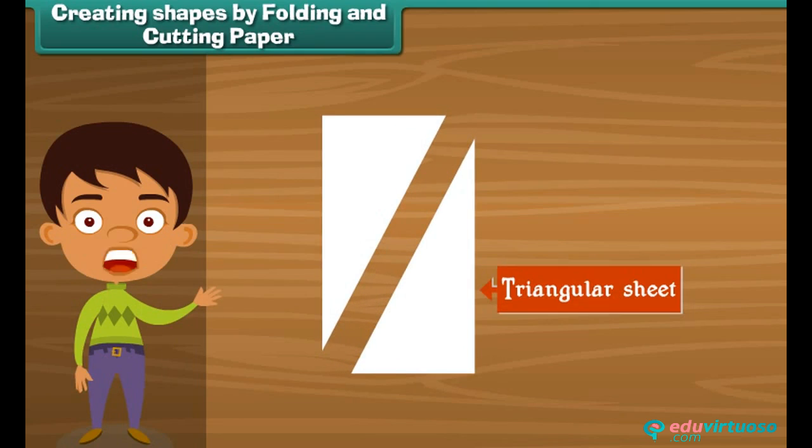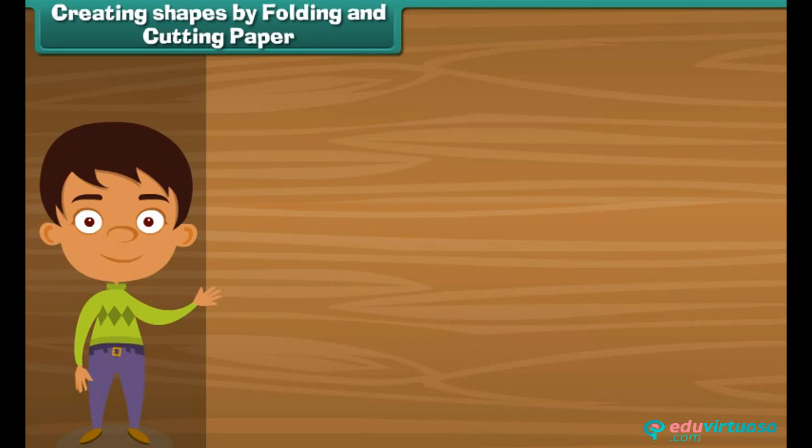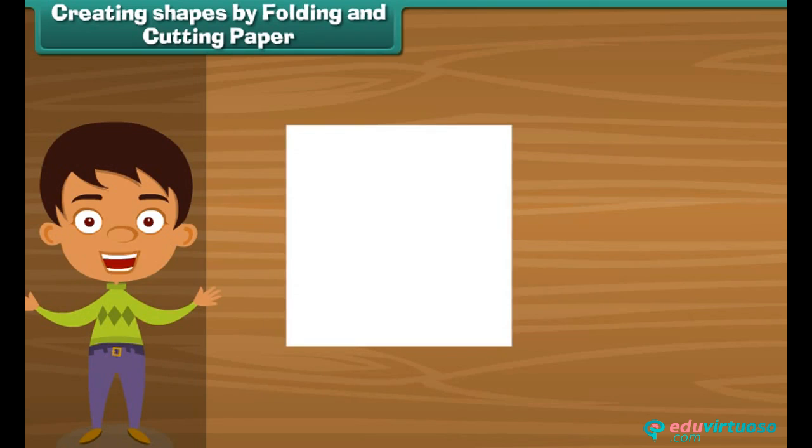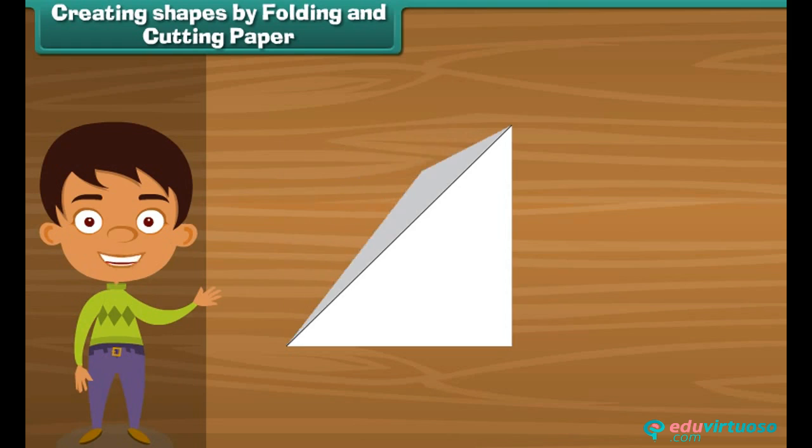Now what you see is a triangle. Friends, let's try to make a circle from a plain square sheet. Make a line on this square like this. Fold it on the line such that the upper triangle is superimposed on the lower triangle.